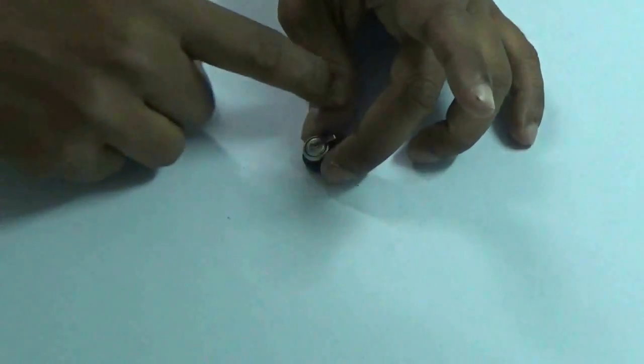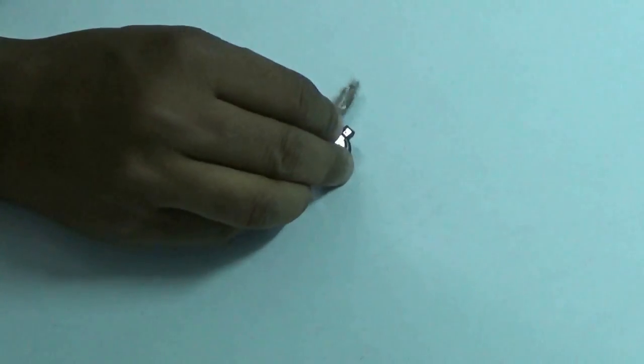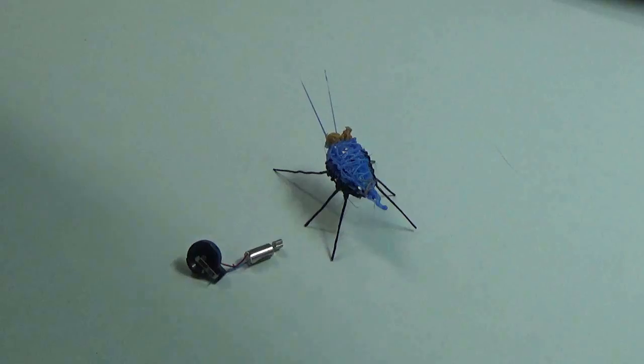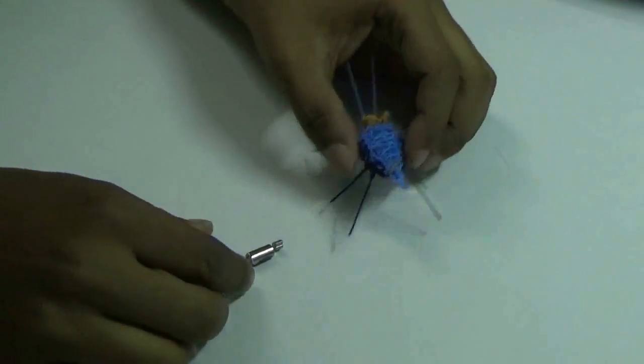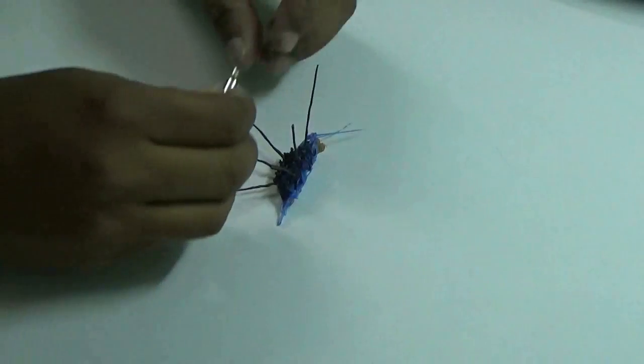If you put the battery, the motor will start rotating and it will vibrate and give you this random motion. I am going to attach it below the insect toy.